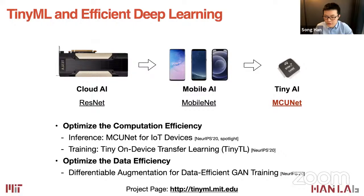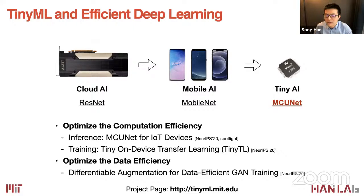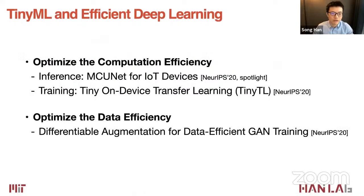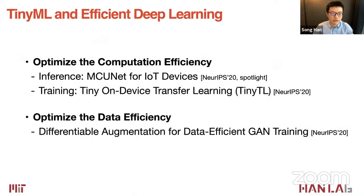We have three papers to describe today in two categories. Category one: optimize computation efficiency — first, MCUNet for efficient inference on IoT devices, then tiny on-device transfer learning. Category two: optimize data efficiency — differentiable augmentation for data-efficient GAN training to train a GAN with only 100 images. Let's start with inference: MCUNet for IoT devices.